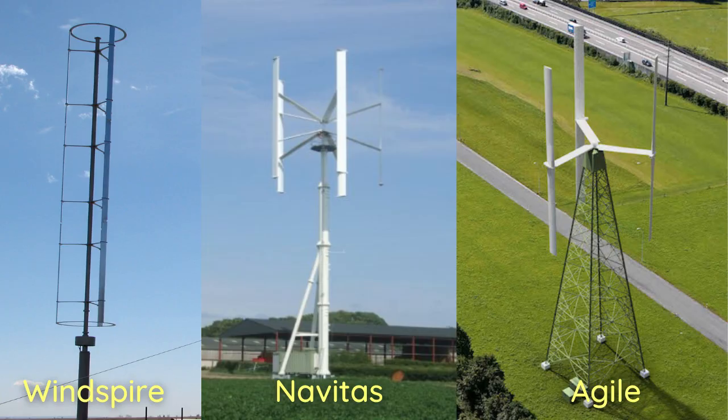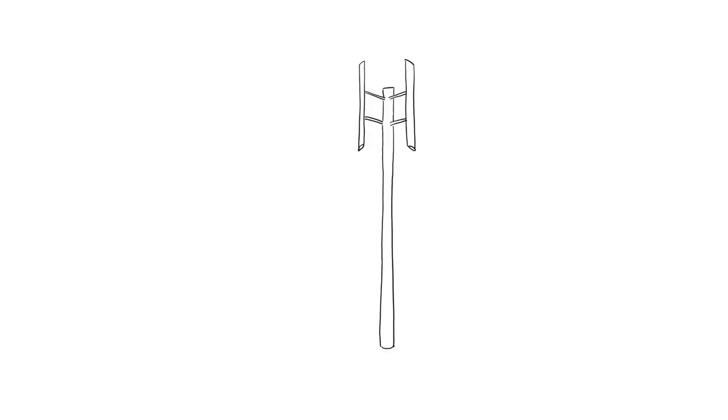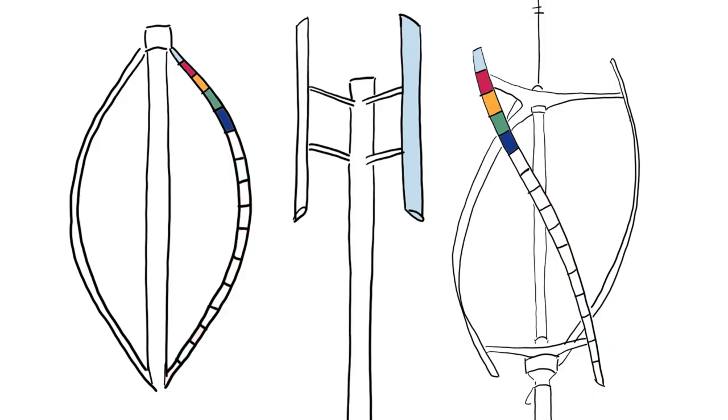I'm going to use the H-type arrangement to talk about the aerodynamics and operating principle, because it's the simplest to analyze and also pretty common among current commercial turbines. You can apply the same method to other types, but it's a bit more involved — you'd need to split the blade into sections, analyze each one separately, and sum them up, much like the BEM method for horizontal axis wind turbine analysis.